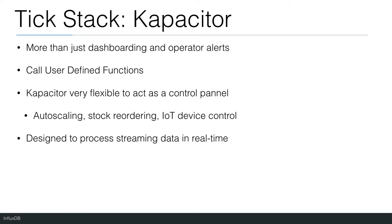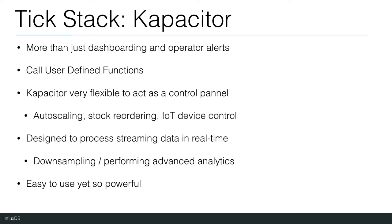Kapacitor is designed to process streaming data in real time. It can be deployed across the infrastructure as both a pre-processor — downsampling and performing advanced analytics before shipping data to InfluxDB — and a post-processor, allowing older higher-precision data to be stored in Hadoop for further analysis. Kapacitor provides a simple plugin architecture that allows it to integrate with any anomaly detection engine, machine learning libraries, pattern matching engines, and rules engines, making it a powerful control system that automates the complete system.